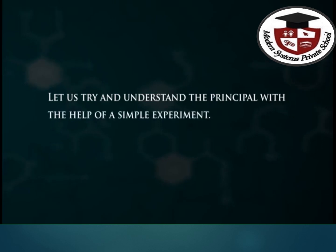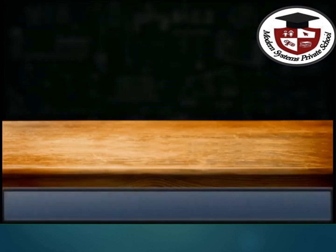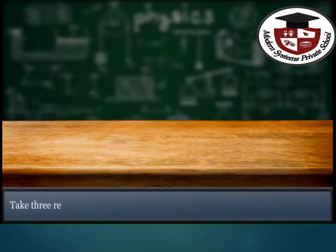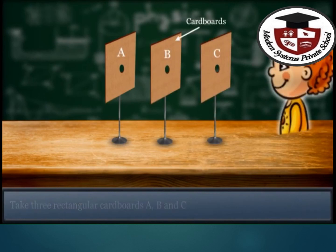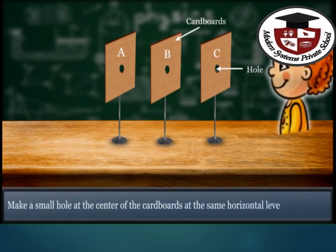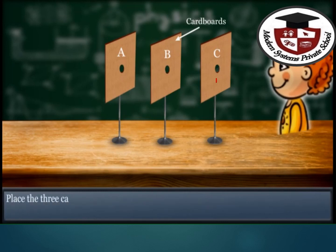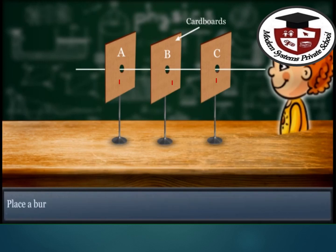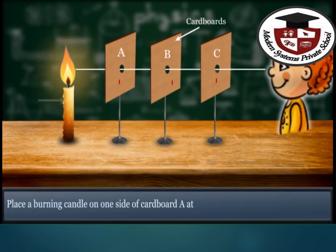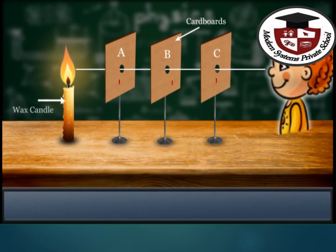Let's try and understand the principle with the help of this experiment. Take three rectangular cardboards, A, B, and C, and put them like this. Make a small hole at the center of each one. Place the three cardboards in such a way that the three holes are in a straight line. Place a burning candle on one side of cardboard A at the level of the holes.